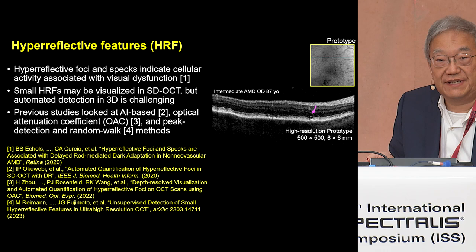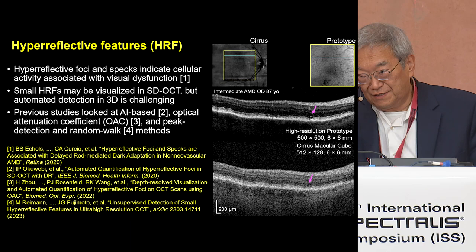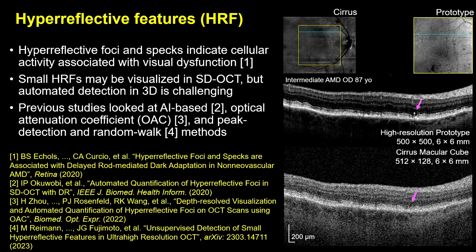With this type of data set, we can track focal pathologies such as hyper-reflective features. These are a known marker for progression in AMD. We can compare this to standard resolution — high resolution on the top, standard resolution on the bottom — and we can improve the visibility of fine focal features.